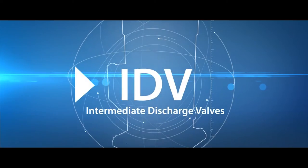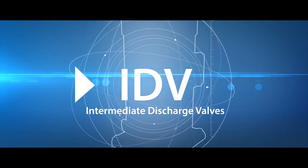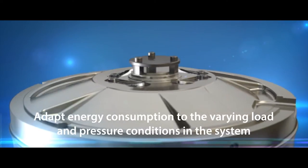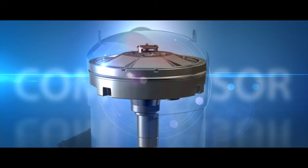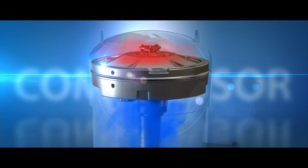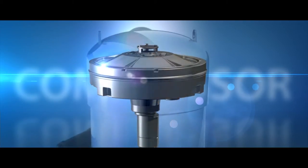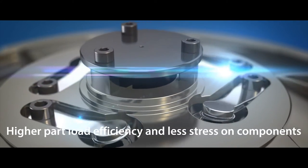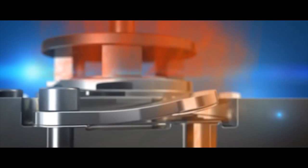First is the intermediate discharge valve or IDV. This feature reduces excessive compression of the electrical motor while maintaining the same cooling capacity, significantly improving the energy efficiency of the compressor, especially in the new part load rating point of the operating envelope.